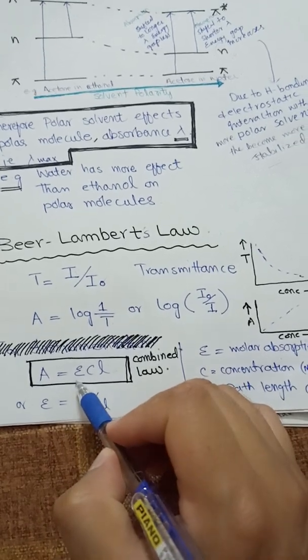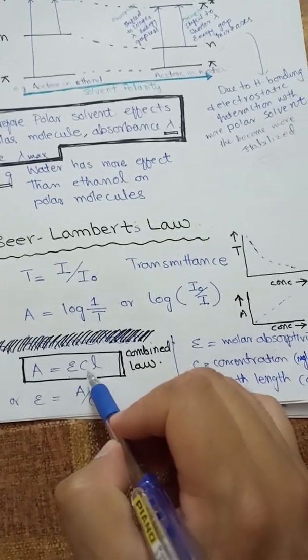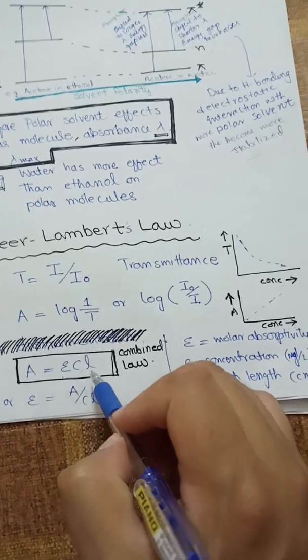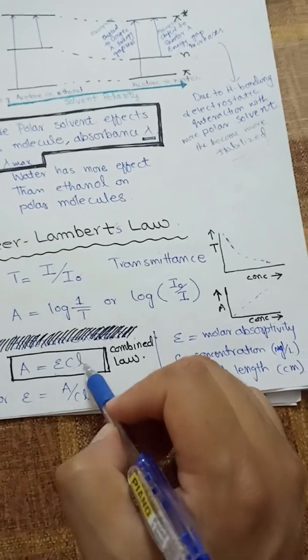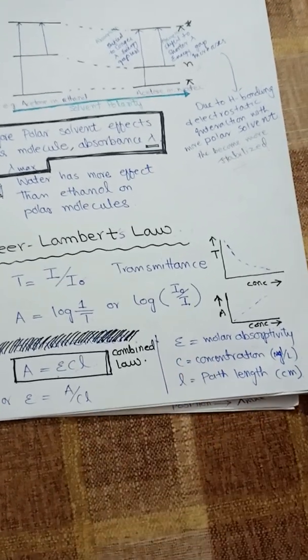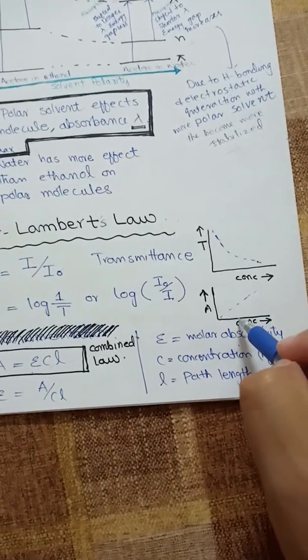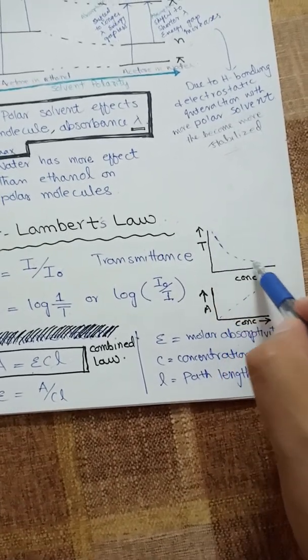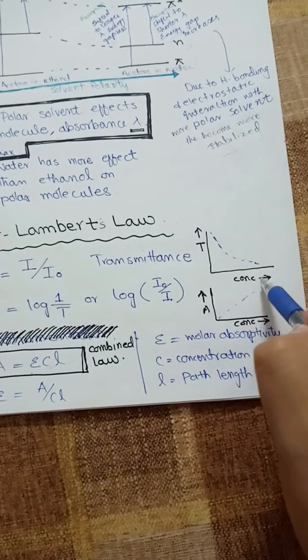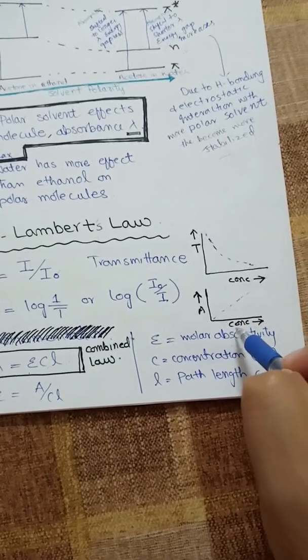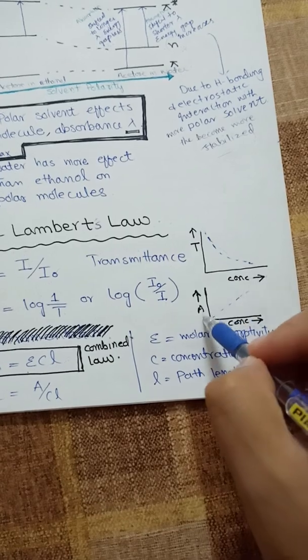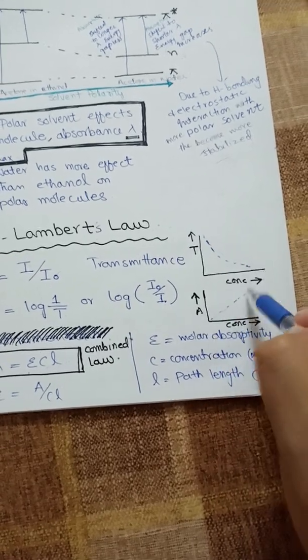According to Beer-Lambert Law, absorbance A = εCL, where ε is the molar absorptivity, C is the concentration of the sample, and L is the path length of the sample. If we plot transmittance versus concentration, we get a curve; but if we plot absorbance versus concentration, we get a straight line.